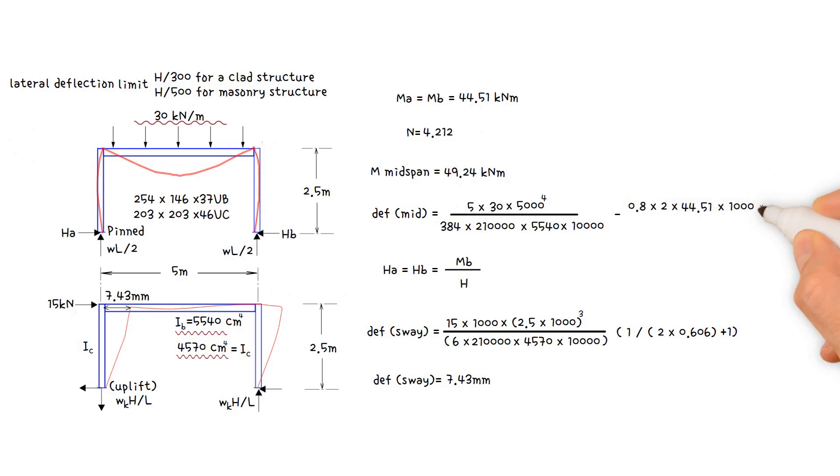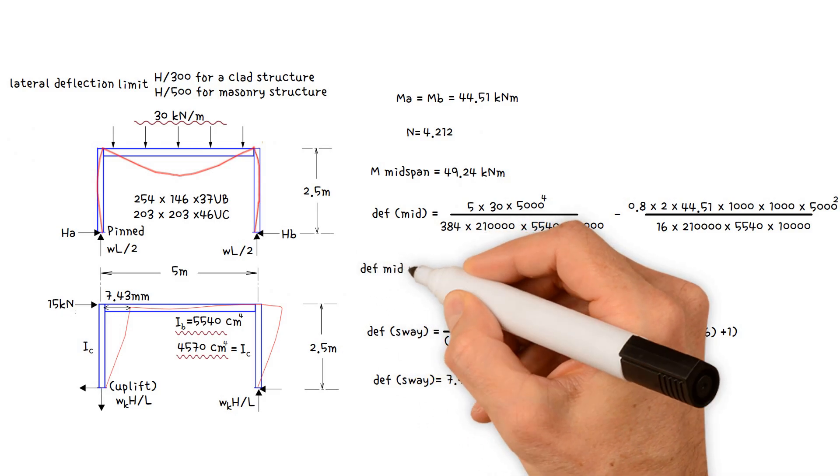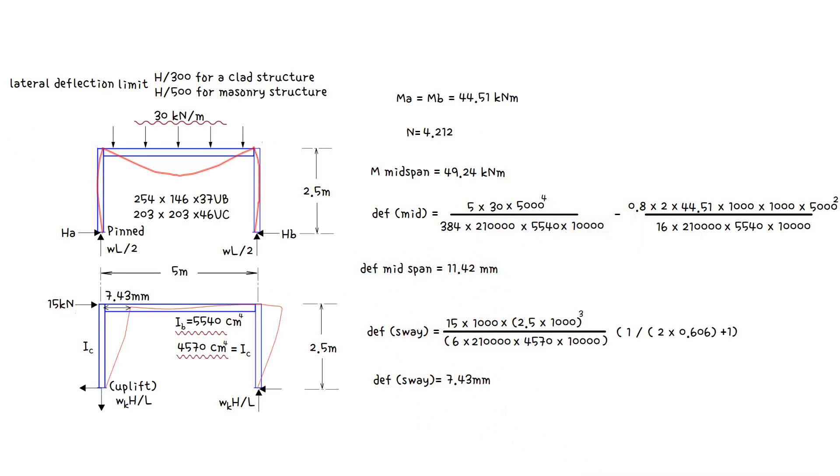Times span 5,000 millimetres to 2 divided by 16 times 210,000 times beam moment of inertia 5,540 centimetres to 4 times 10,000 to convert it to millimetres. Therefore, deflection mid-span equals 11.42 millimetres.